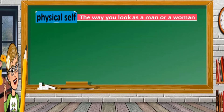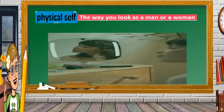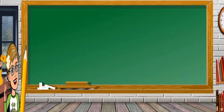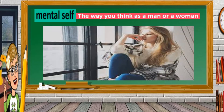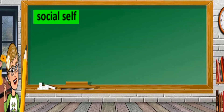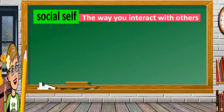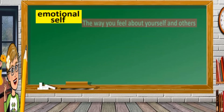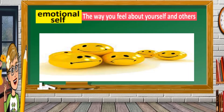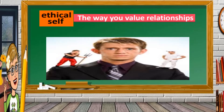To summarize the dimensions: physical self is the way you look as a man or a woman; mental self is the way you think; social self is the way you interact with others; emotional self is the way you feel about yourself and others; and ethical self is the way you value relationships.